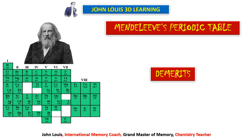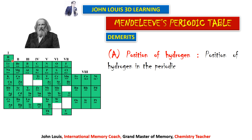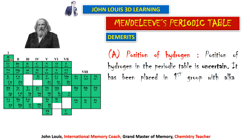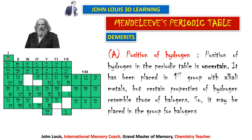Now the demerits of Mendeleev's periodic table. The first demerit is the position of hydrogen — hydrogen was found to have similar properties with alkali metals and also with the halogen group. Therefore he was not able to give an exact position to hydrogen in the periodic table.